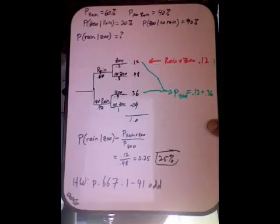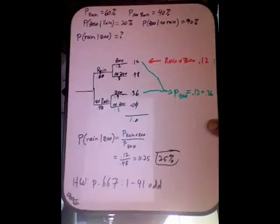One last example with the tree diagram. These examples are hard, and I thought another one would be good. So back to the thing about raining and going to the zoo — dependent probability, conditional probability. 60% chance of rain, so 40% no rain. The probability that I go to the zoo given that it rains is 20%. Probability that I go to the zoo given that it does not rain is 90%. And I want to know the probability that it rained given that I'm at the zoo — just because I want to know, to see if you know how to do this.